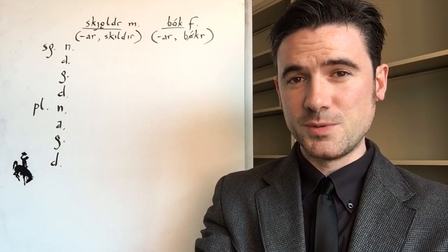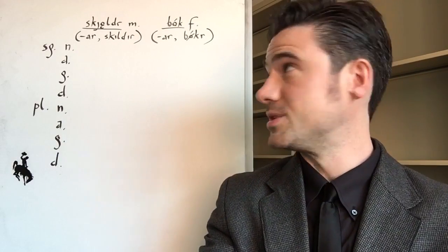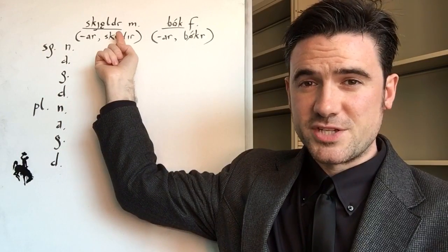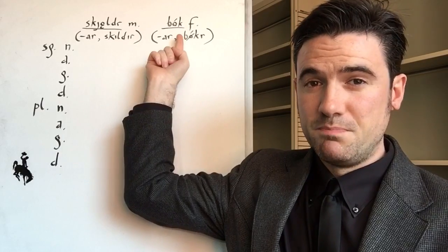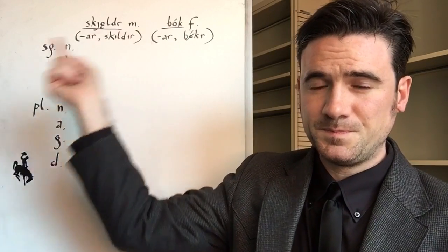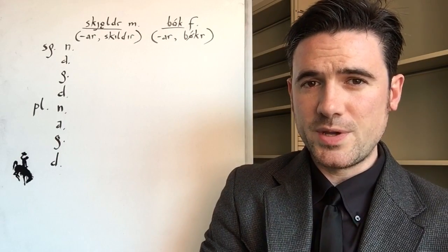Alright, let's do a couple more. Okay, here are the last two practice nouns that I have time for today. SKJǪLDR, which means shield, a masculine noun, and BÓK, which means book, a feminine noun. One, two, three, pause.